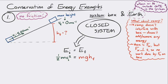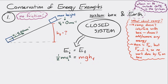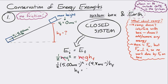Therefore, one-half mvi squared is equal to mghf. Masses cancel out. We put in the information that we know, and we can solve for the final height: 1.28 meters.